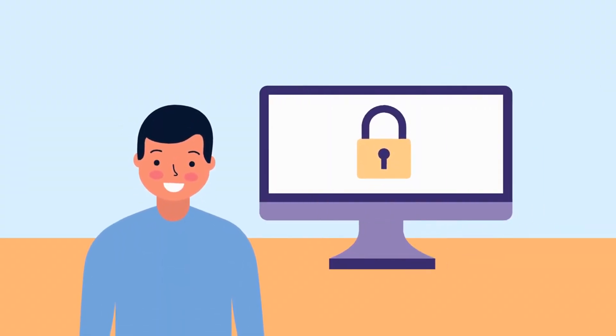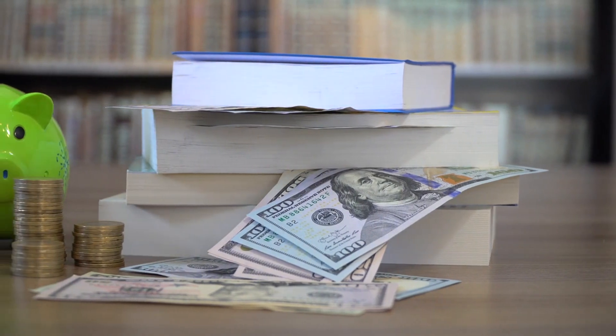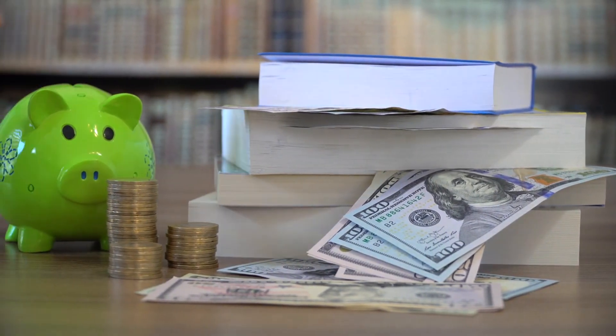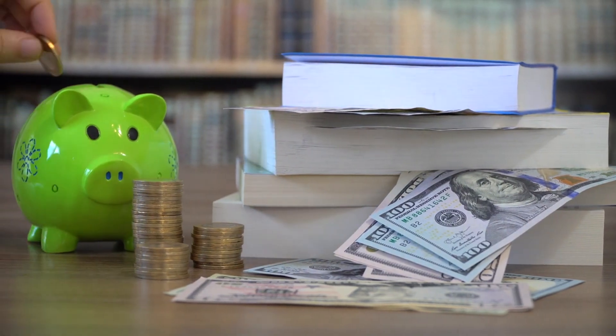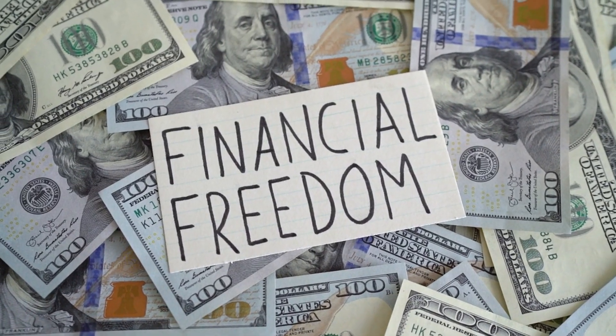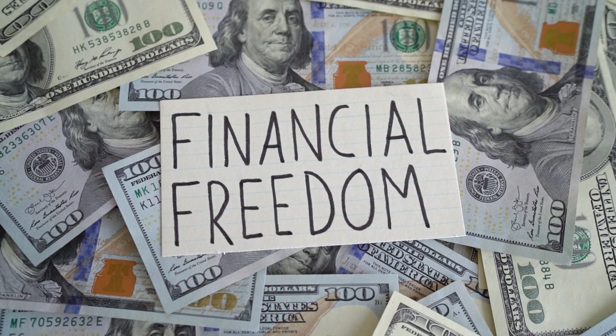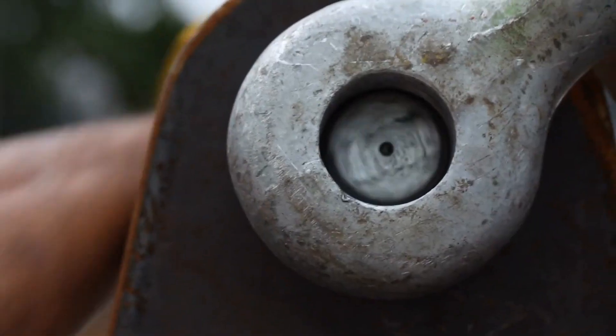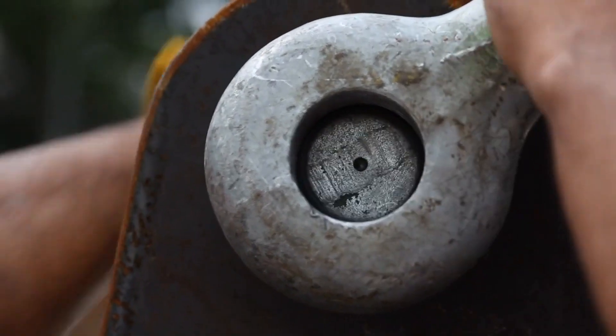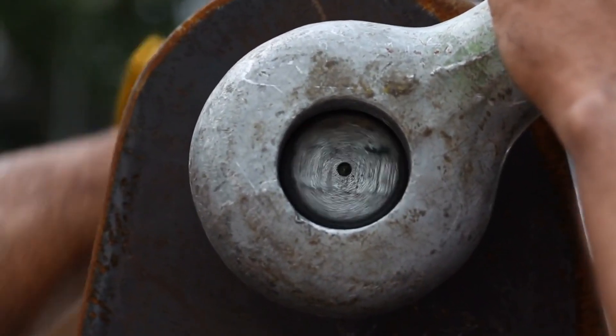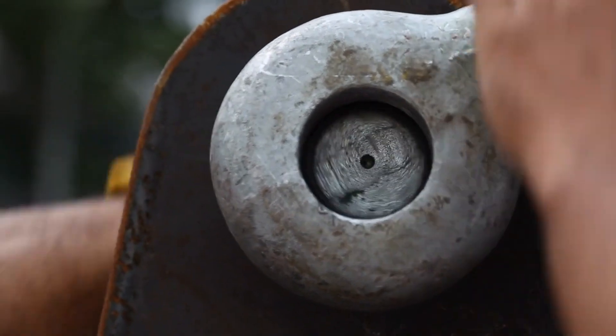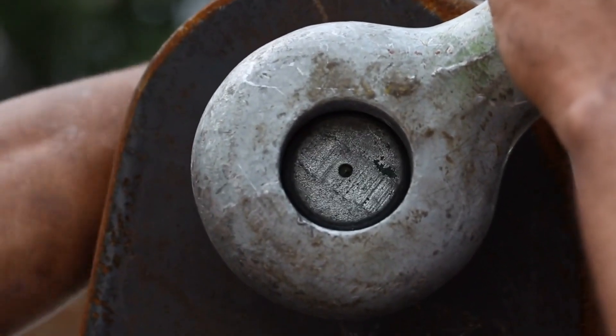Number two, the illusion of job security. Schools often emphasize the importance of obtaining a stable job with benefits as a means of achieving financial security. While a stable job is undoubtedly valuable, it doesn't necessarily guarantee financial freedom. The concept of job security has evolved in the modern era, with many industries facing rapid changes and technological advancements that can lead to job displacement.